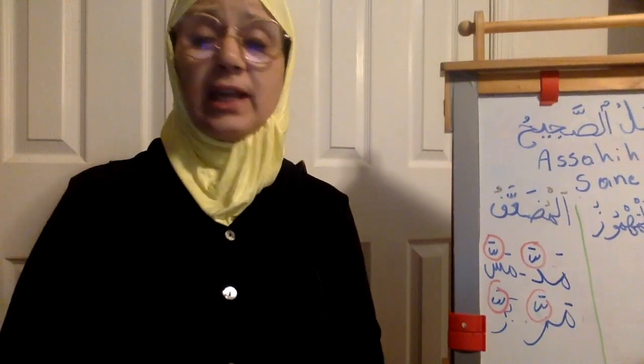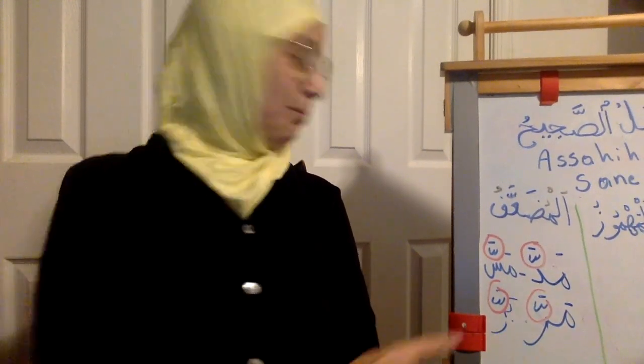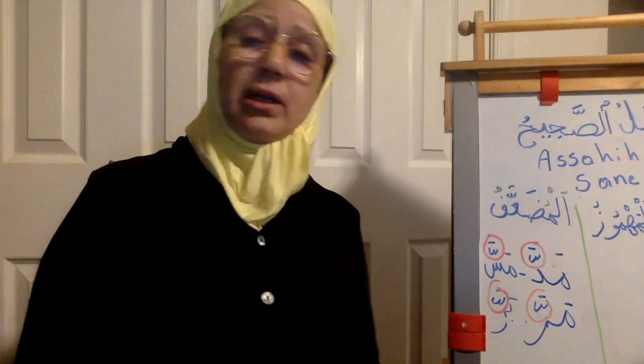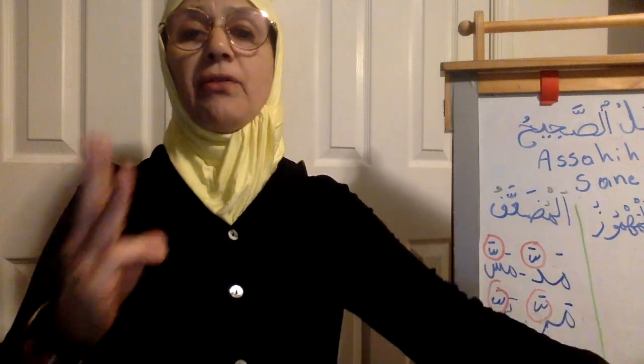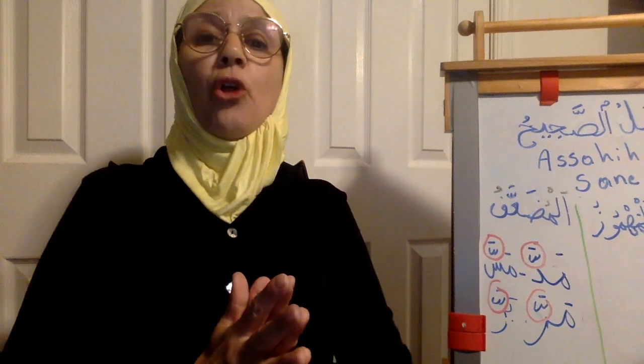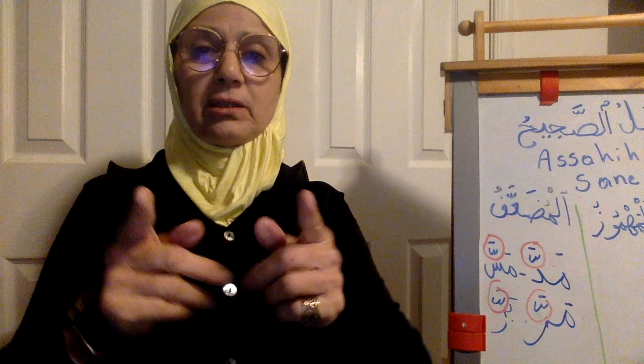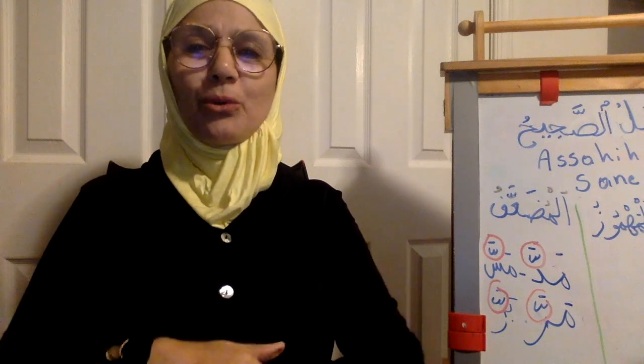You may ask: 'Teacher Khadija, you told us the verb always has three letters, but this verb seems to have only two — how?' I will answer: this fi'l does not have two letters, it has three, because the Shadda represents another letter — the same letter twice. So the original huroof of the fi'l are thalatha. The original of the fi'l is thulati — say it: thulati.